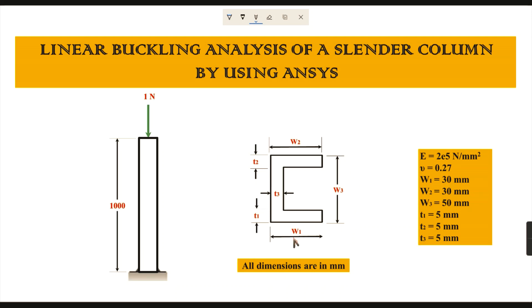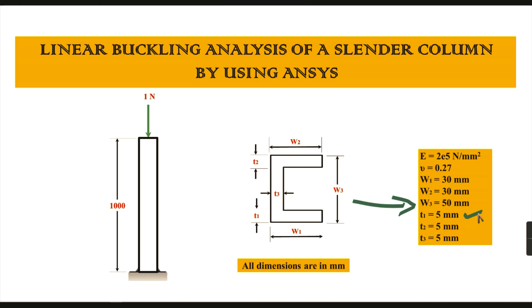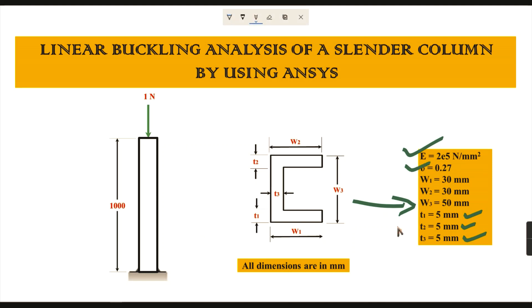The cross-section for this slender column is a C-type cross-section. The dimensions are W1, W2, and W3, where W1 and W2 stand for the width of the lowest and topmost regions respectively, and W3 is the total height of the cross-section. The thickness of all flanges is equal at 5 mm. The material inputs are Young's modulus E = 2×10⁵ N/mm² and Poisson's ratio = 0.27.